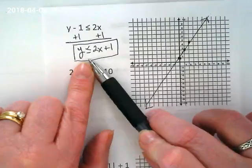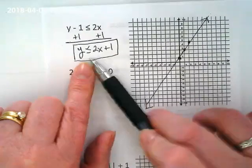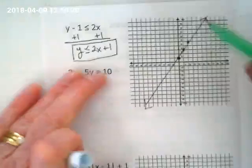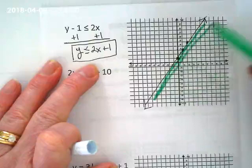Why under? Because the y is less than the line. So this is where you're going to take your first color and we're going to shade underneath that line.